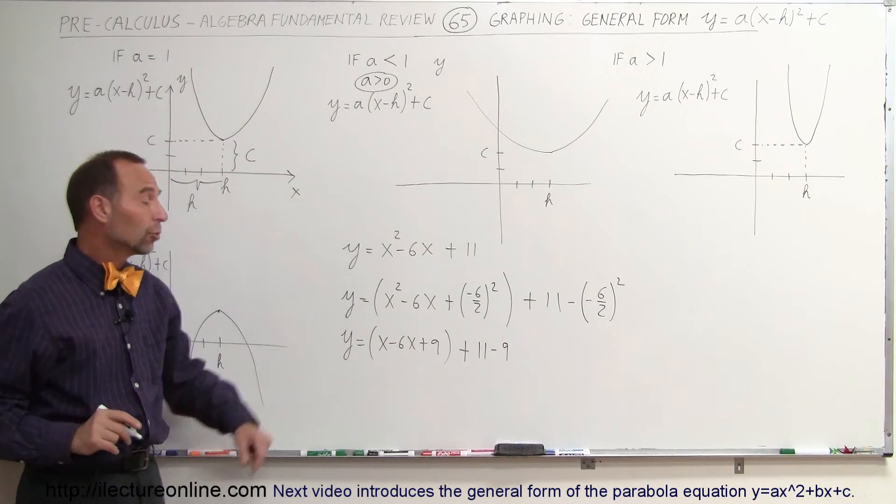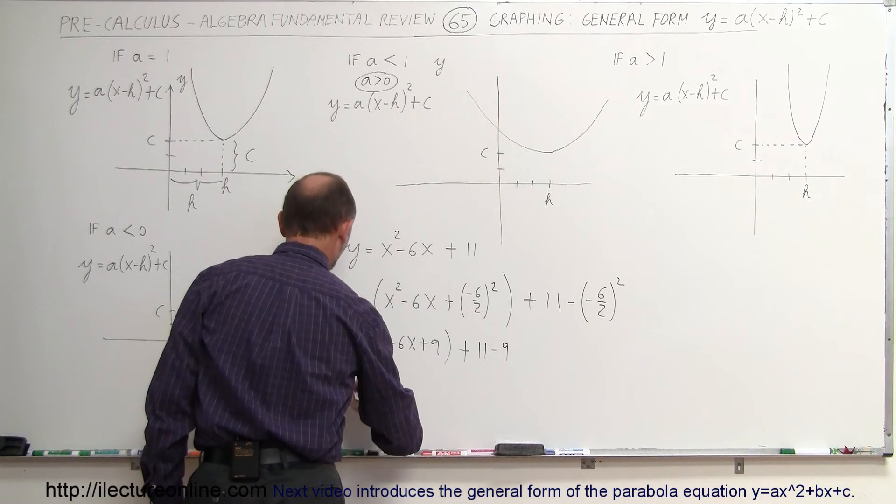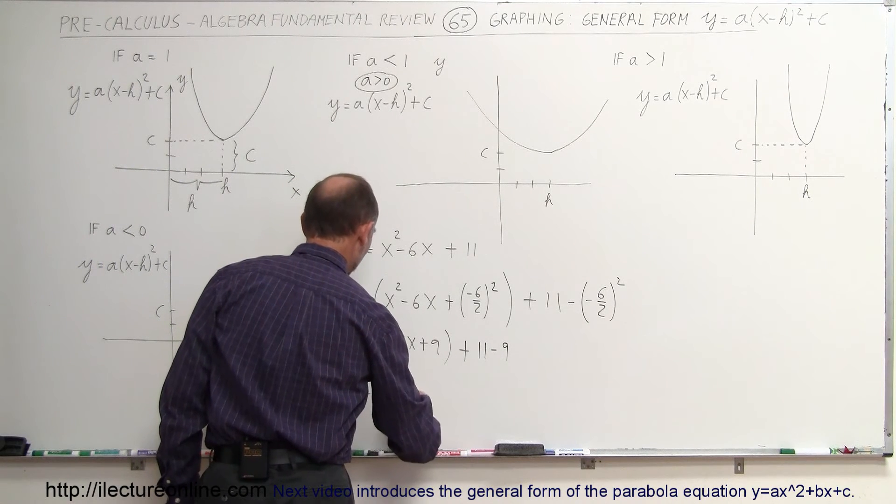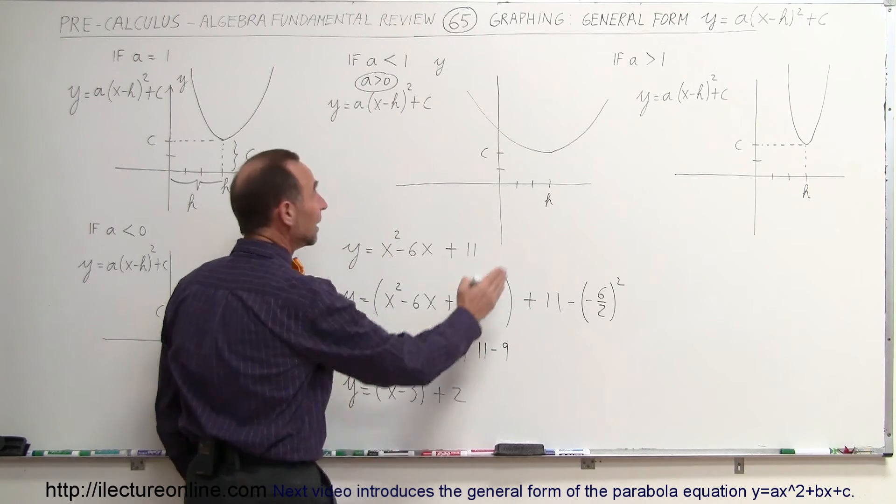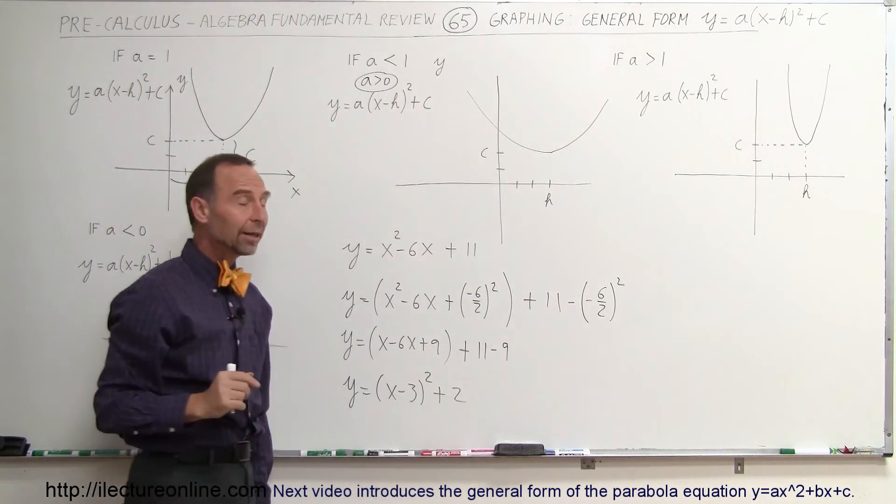This can be written as a binomial squared, so this can now be written as y equals the quantity (x minus 3) squared, and that would be plus 2. Now notice, we have the equation in the exact same general format as that.